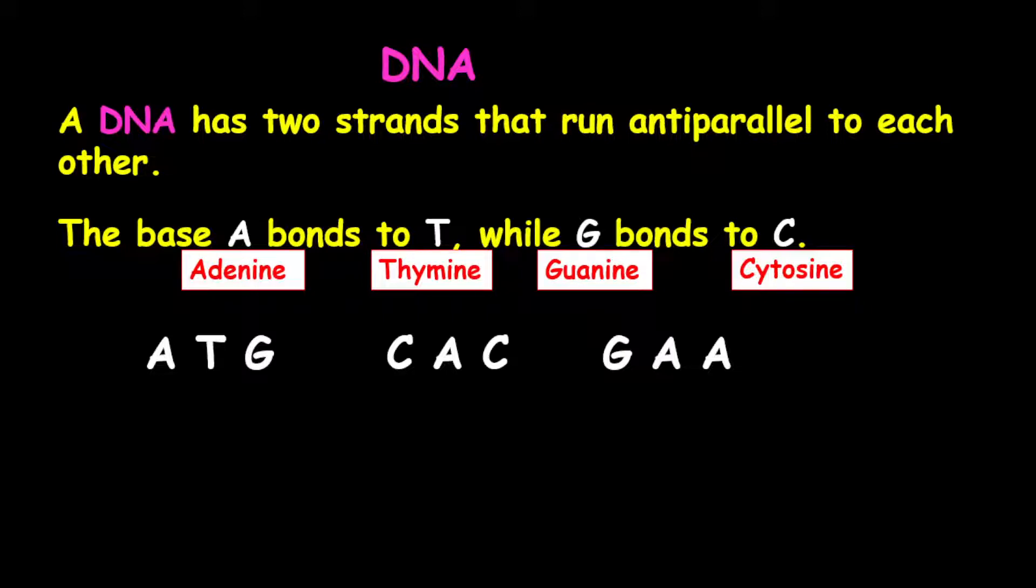Now, to form our corresponding strand, A will bond to T, T bonds to A, G bonds to C, C bonds to G, A bonds to T, C bonds to G, G bonds to C, and our A's, they bond to T.